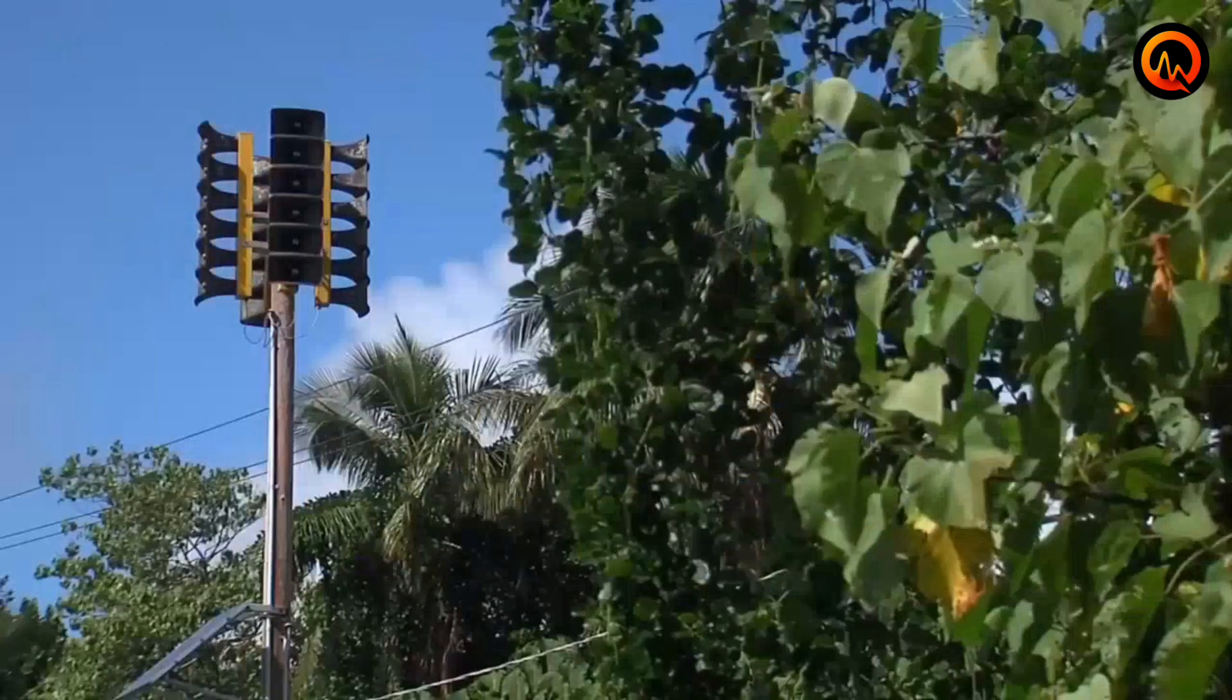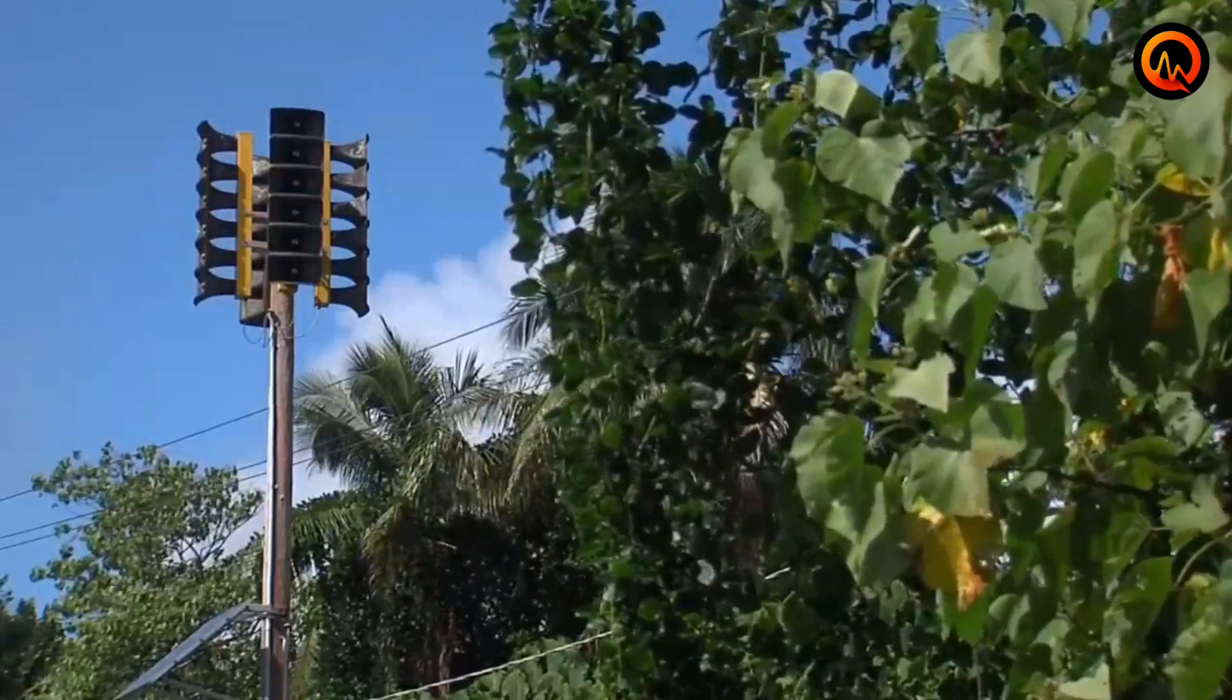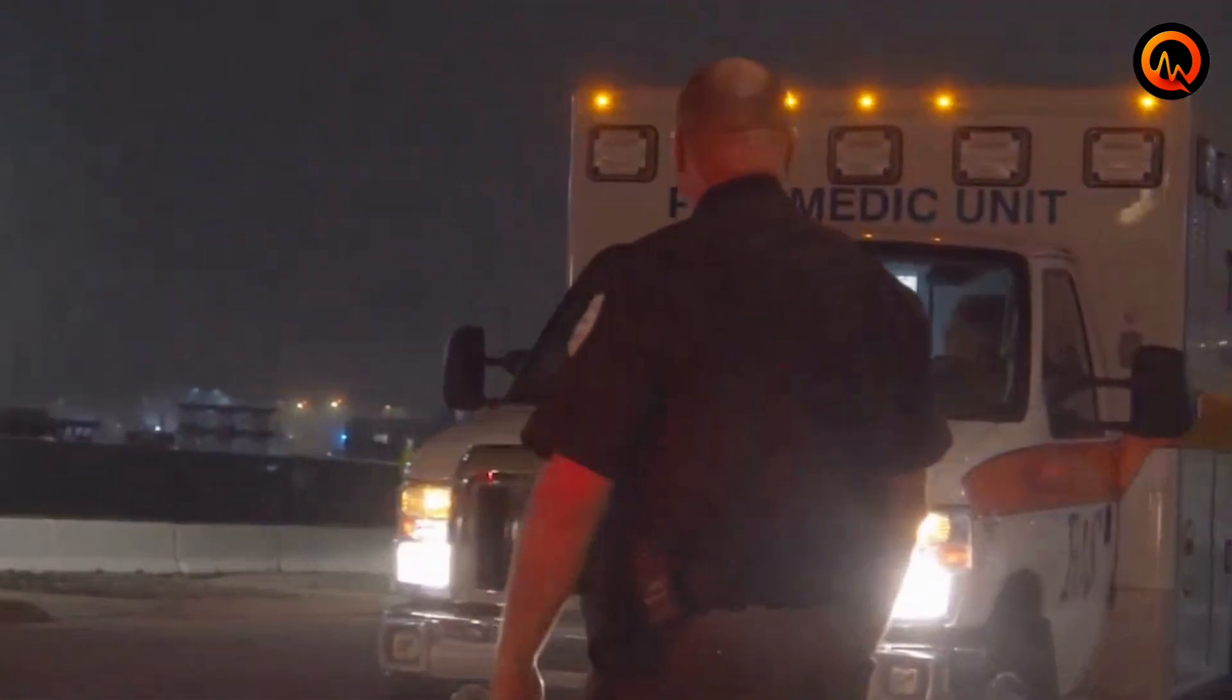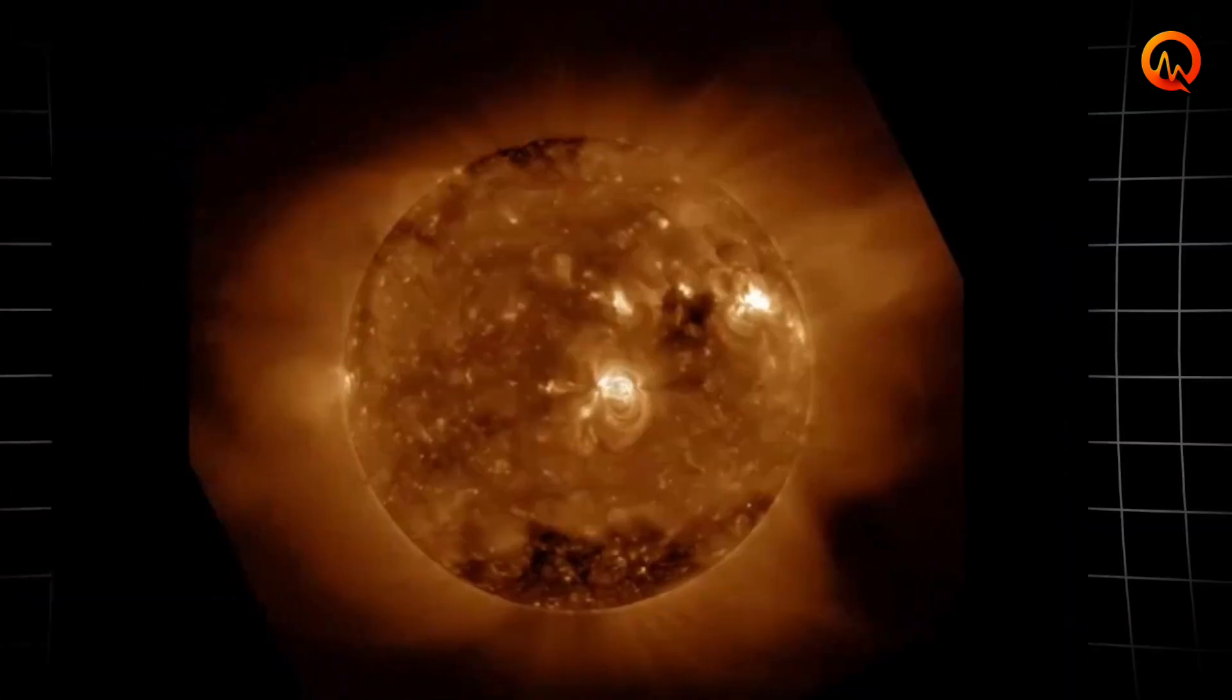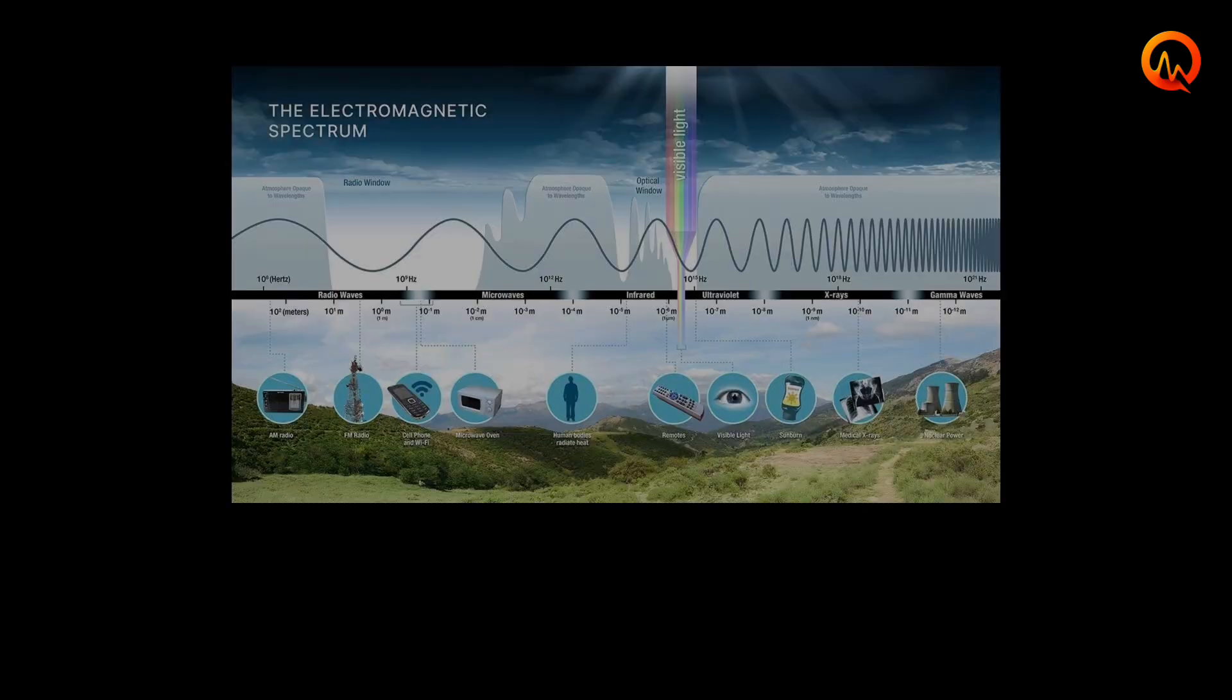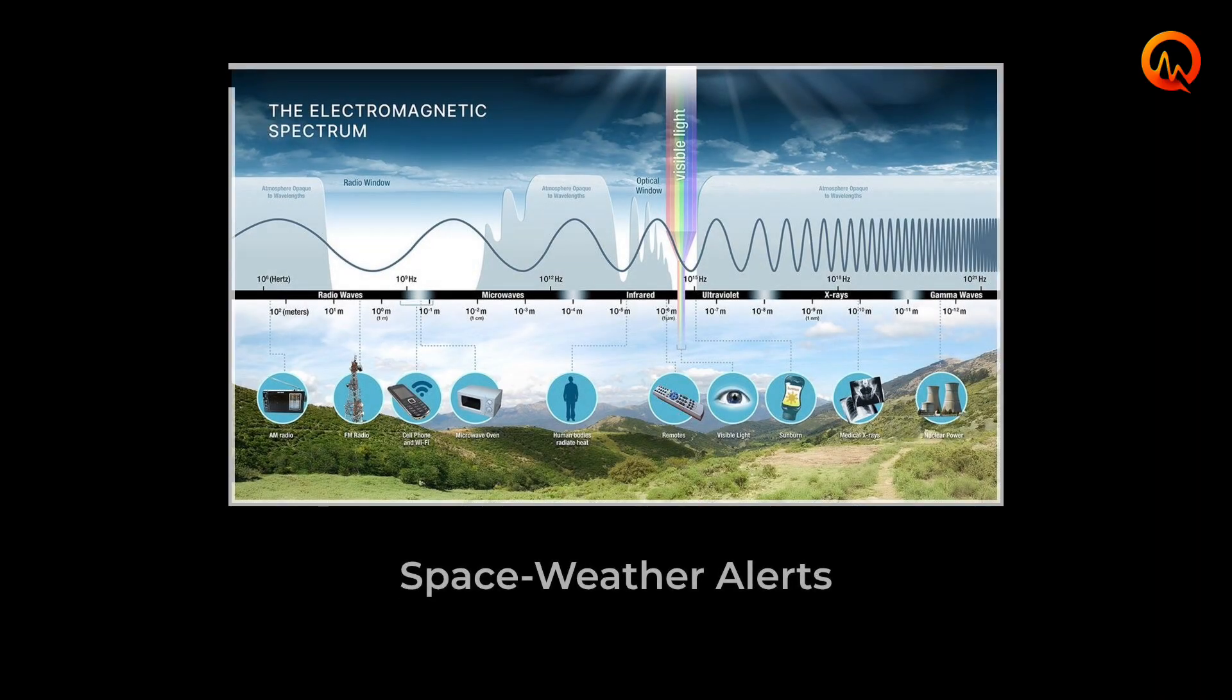These resources help communities understand when heightened vigilance is warranted based on both terrestrial and extraterrestrial factors. Understanding natural disaster interconnections becomes crucial for effective preparedness. Volcanic eruptions triggered during periods of intense solar activity may occur with less local warning than traditional eruption patterns. Electromagnetic destabilization can accelerate magma chamber processes, potentially shortening the typical precursor period.